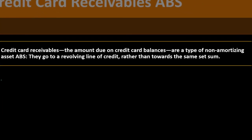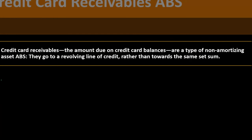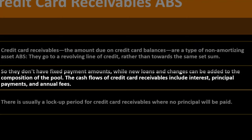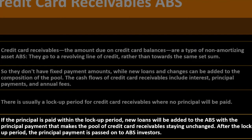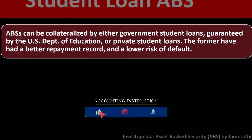Credit card receivables — the amounts due on credit card balances — are a type of non-amortizing ABS. They go to a revolving line of credit rather than toward a set sum, so they don't have fixed payment amounts; new loans and changes can be added to the pool's composition. Cash flows from credit card receivables include interest, principal payments, and annual fees. There is usually a lock-up period where no principal is paid; after the lock-up period, the principal payment is passed on to ABS investors.